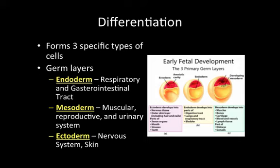Looking at the root words helps: 'endo' means inside, which makes sense as endoderm builds the respiratory and gastrointestinal tract. 'Meso' means middle, so mesoderm refers to the muscular and urinary systems — things in the middle of the body. 'Ecto' means outside, giving us the nervous system and skin.